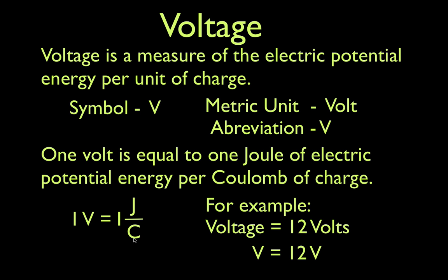A joule is a measure of the amount of energy. A coulomb is a measure of the basic unit of charge. We can go into what joules and coulombs are in another video, but suffice to say that one volt is one joule — one unit of energy for every unit of charge. When we write that down, we might write the voltage is equal to 12 volts, or V equals 12V, and you would read that as: the voltage of that thing is 12 volts.